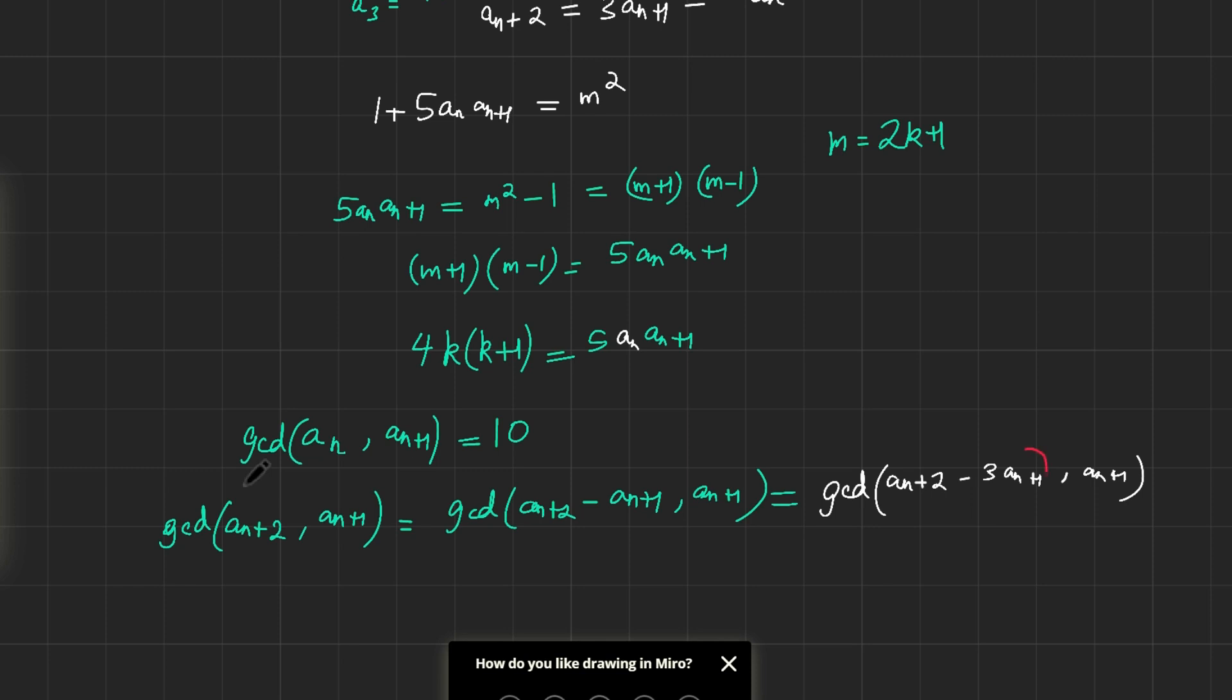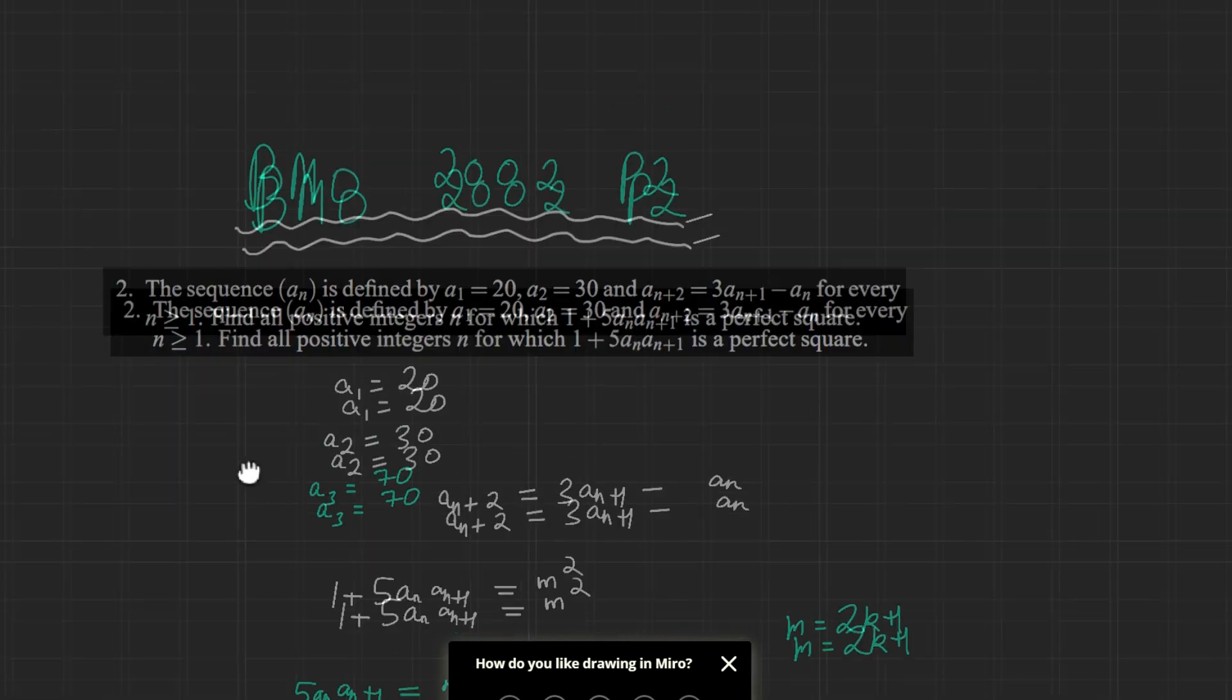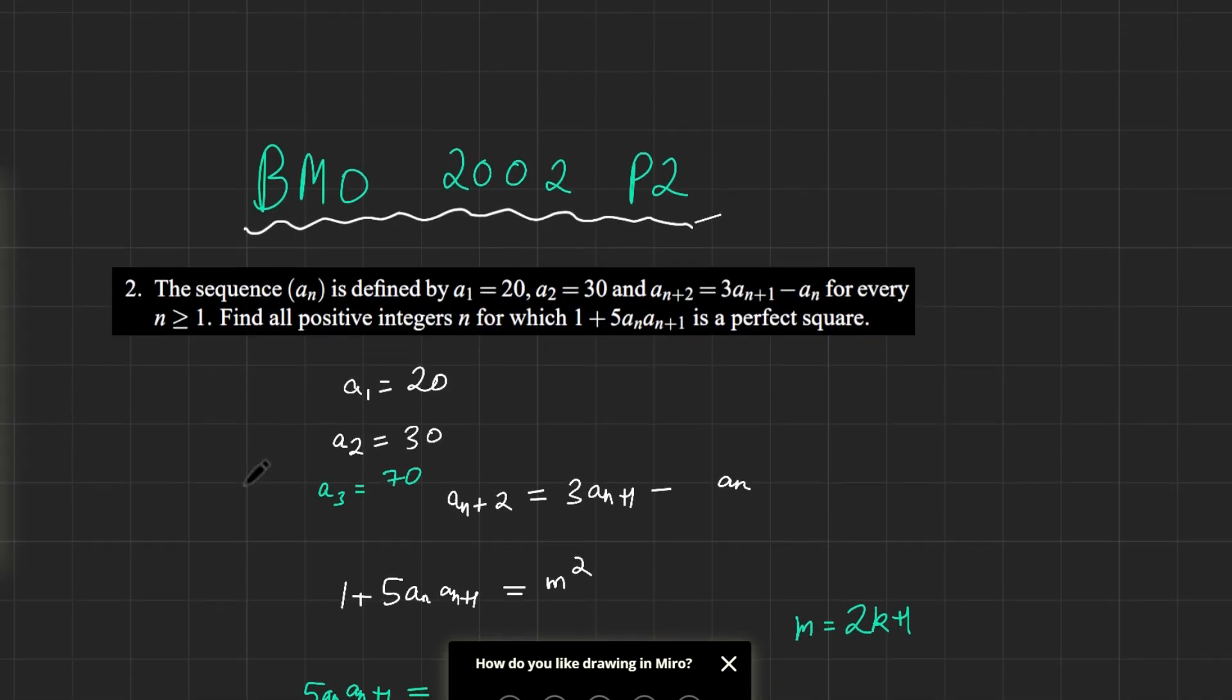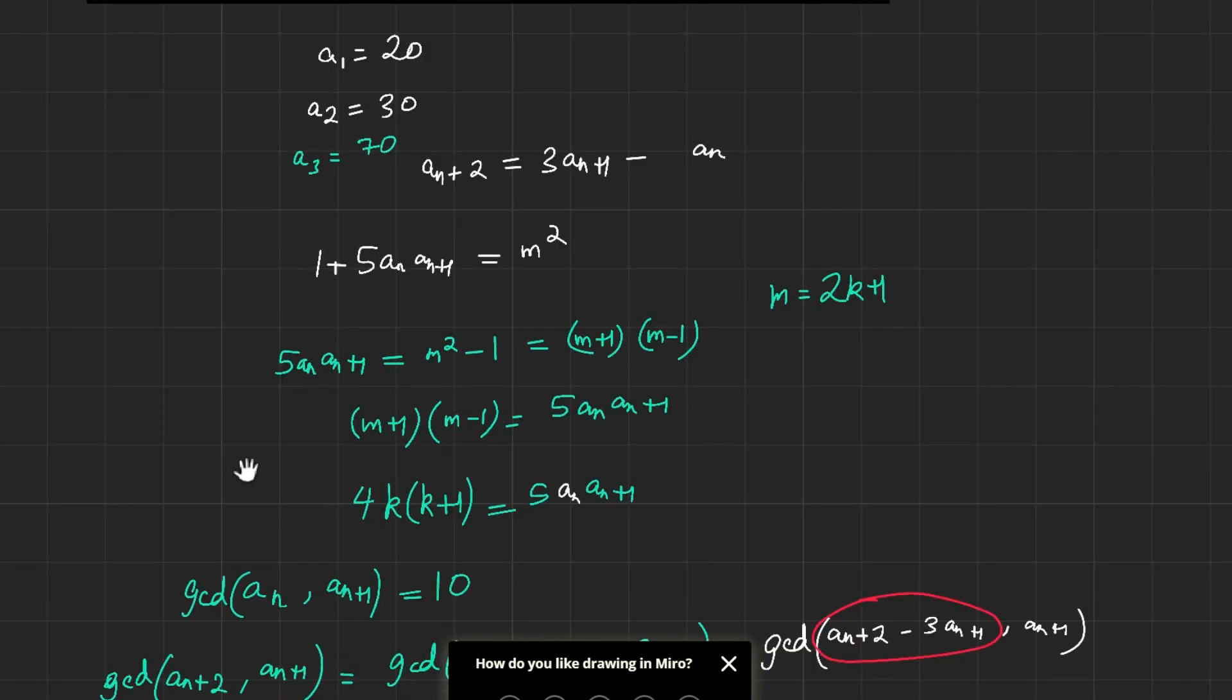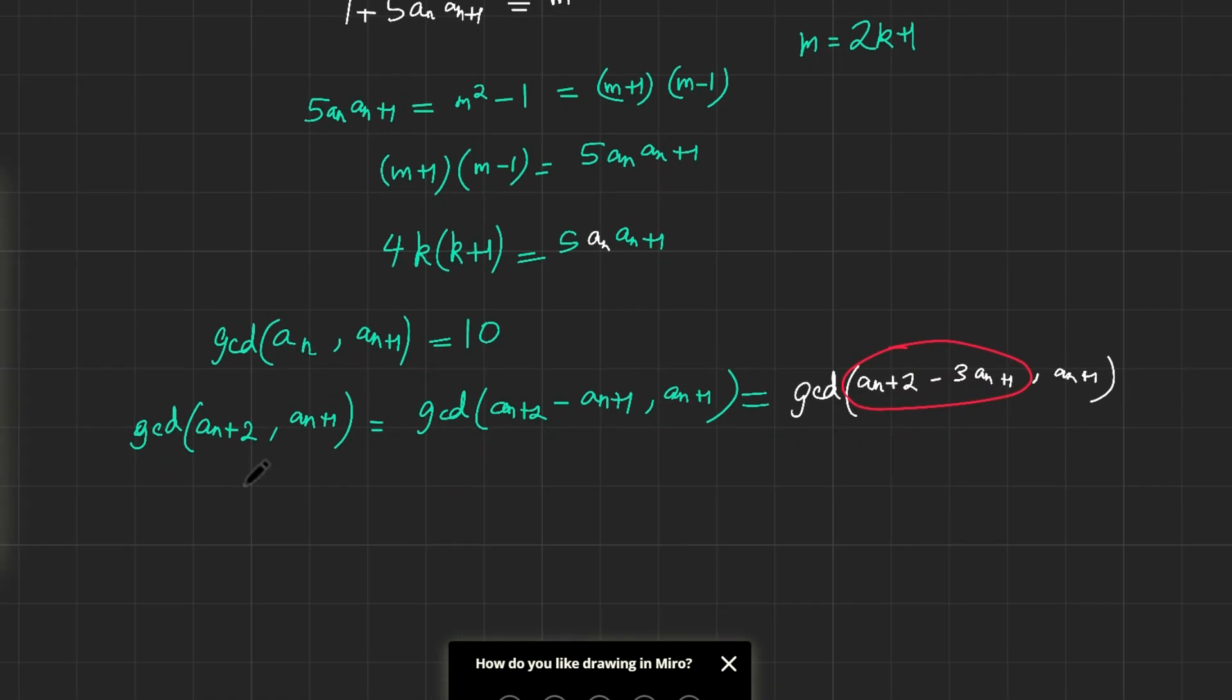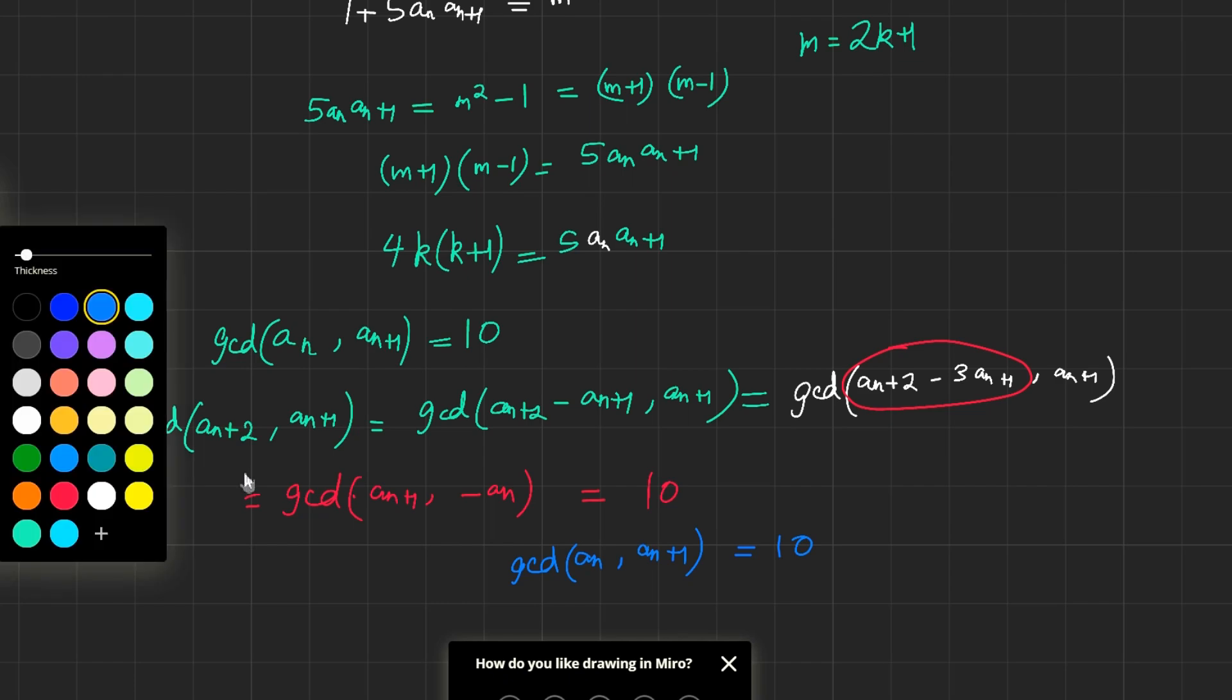But wait a second. This quantity right here is actually just the expression for aₙ, or rather negative aₙ. But negative doesn't really matter because it doesn't change the greatest common divisor. So therefore, this would be the GCD of aₙ₊₁ and minus aₙ, which is, as we know, 10. So by induction, I can therefore say that the GCD of aₙ with aₙ₊₁ is 10. And this holds for all values of n.